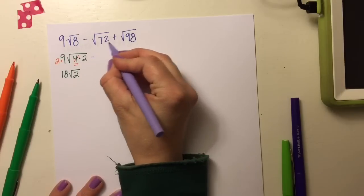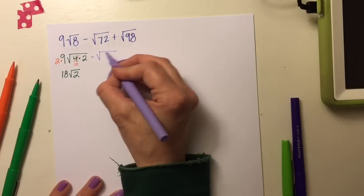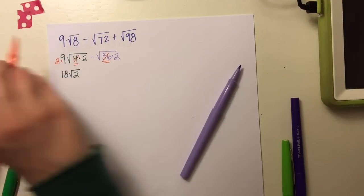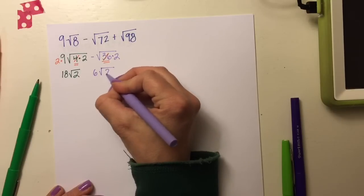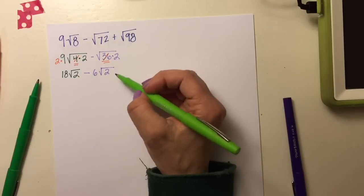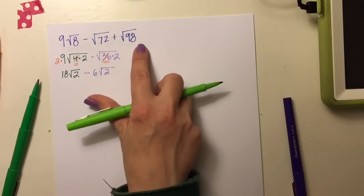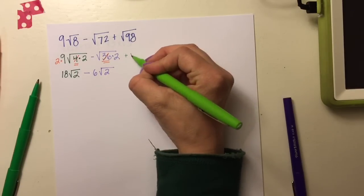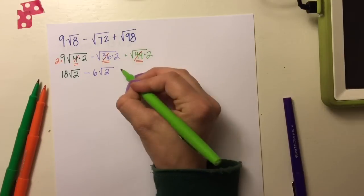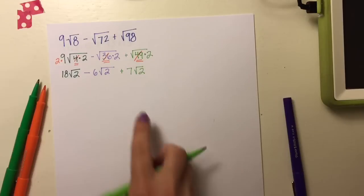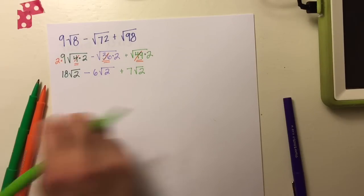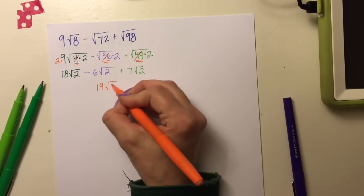Then subtracting √72: I write it as 36 times 2, because √36 = 6, so 6 comes outside, giving minus 6√2. The last part is √98 — since the others are square roots of 2, it's going to be something times 2, specifically 49 times 2, and √49 = 7, so that's plus 7√2. Now they all have the same radicand: 18√2 − 6√2 = 12√2, and 12 + 7 = 19√2.